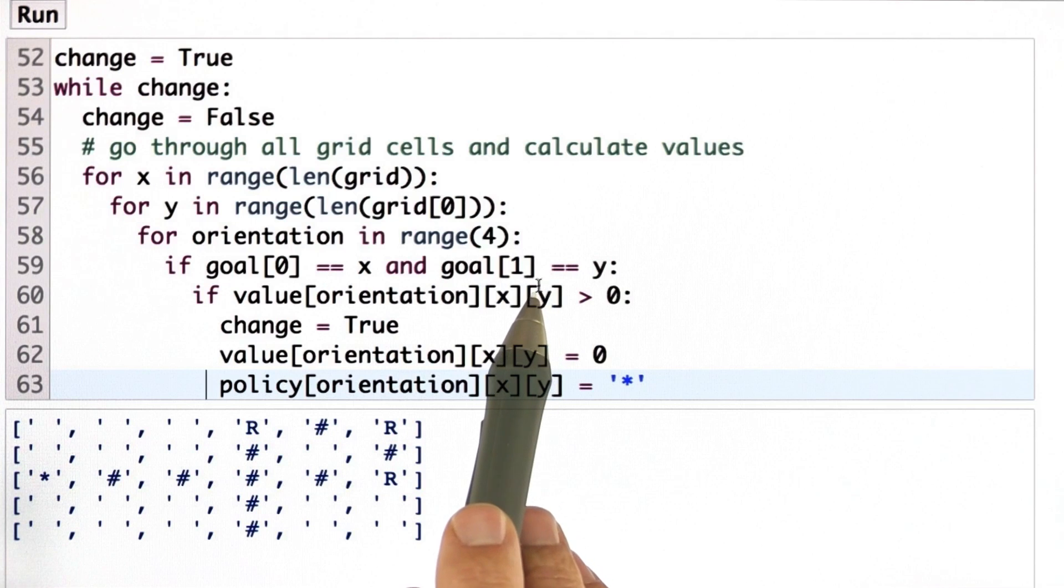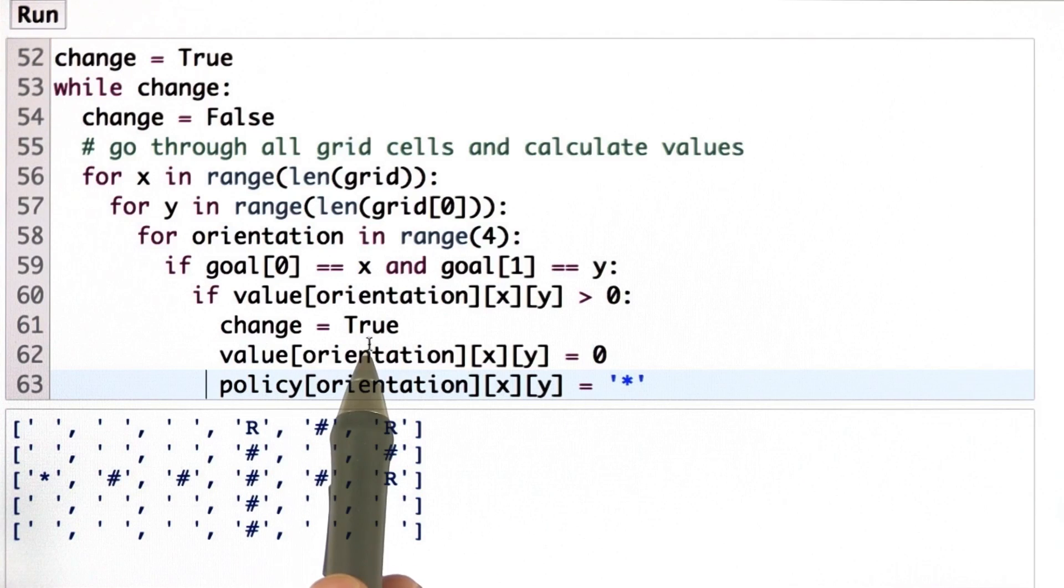If you found the goal location, then update the value. And if there's an actual update, set change to true. And also mark it as the goal location.